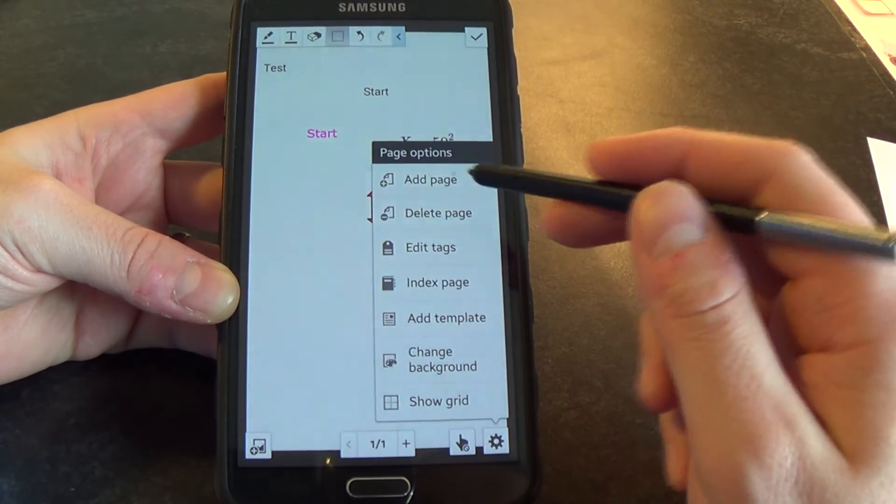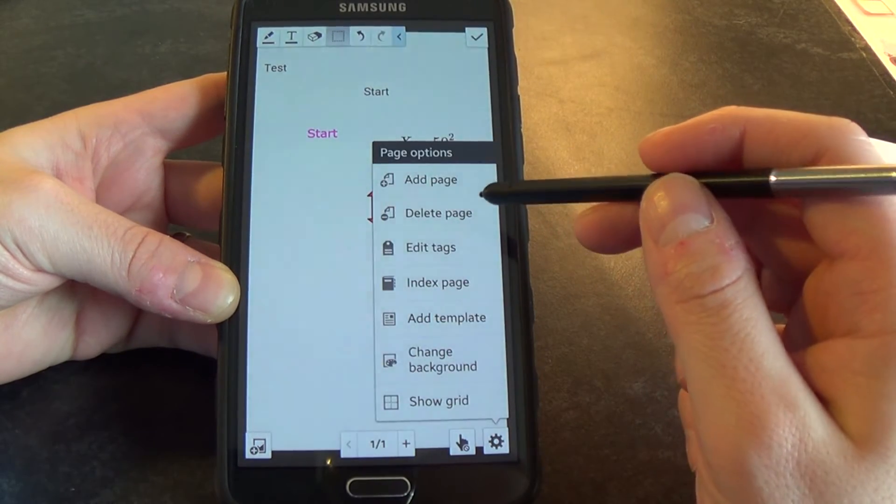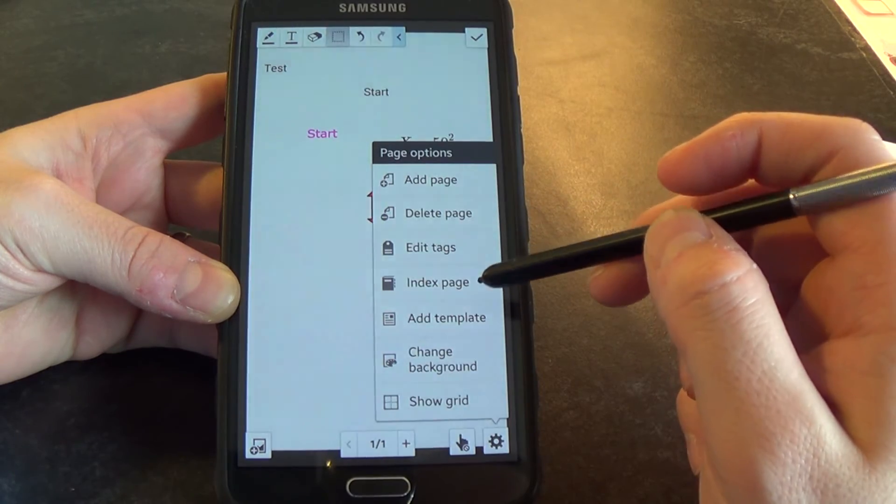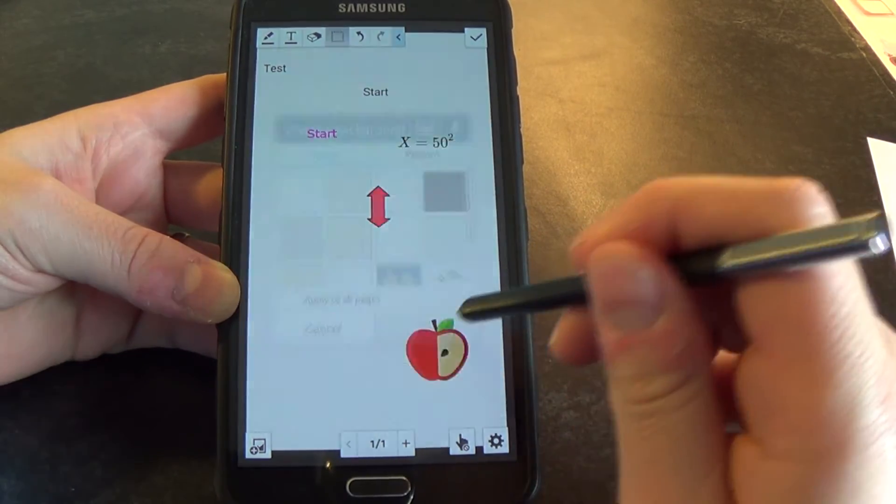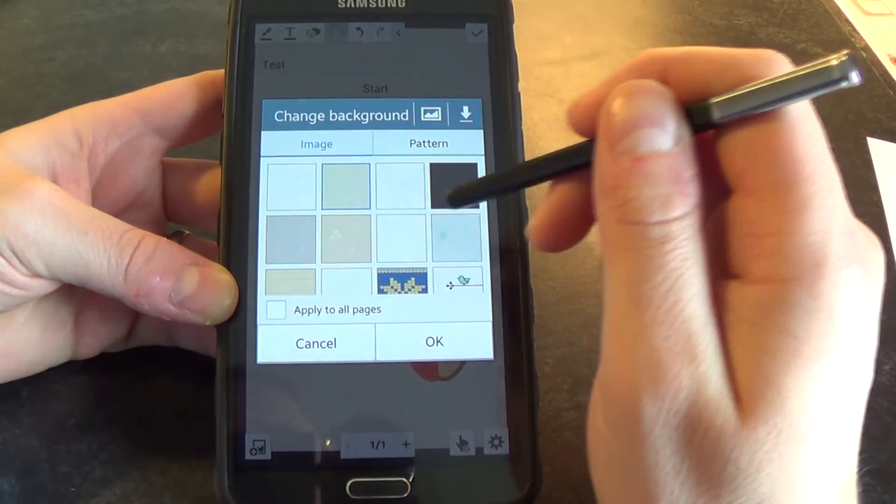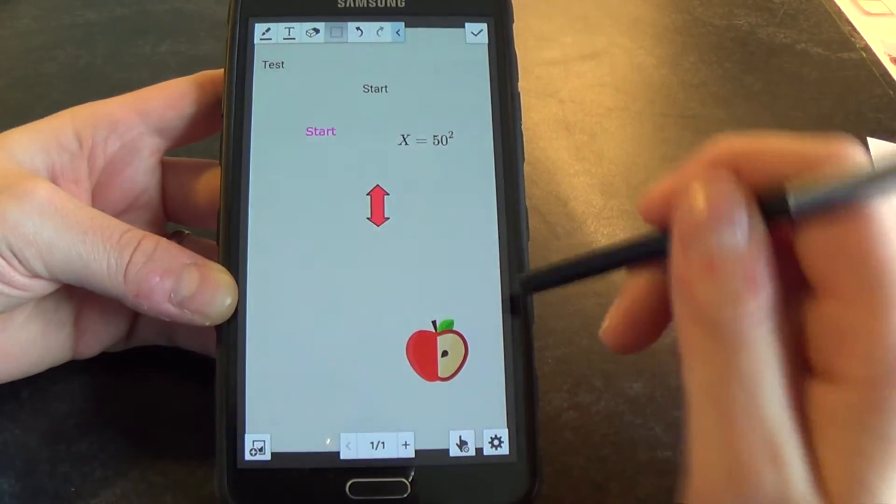And then you have a few options here. You can add pages, delete pages, edit the tags, index the page, and change the background. So if I select that, there's different templates there. You can apply it to the background of the page.